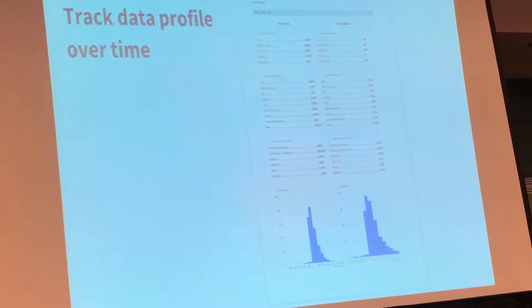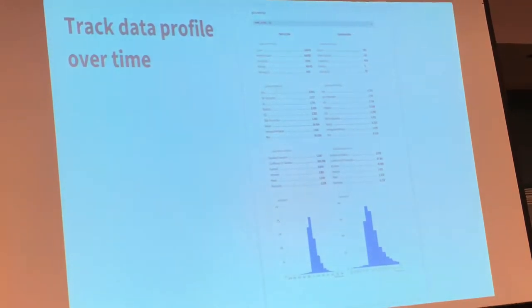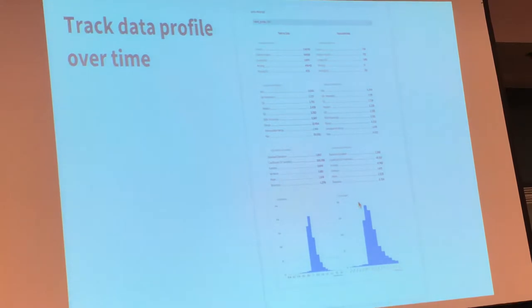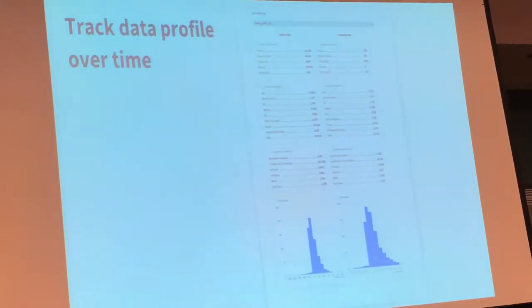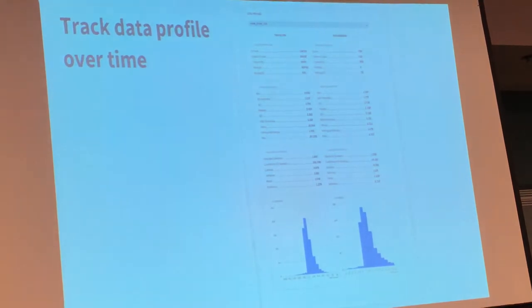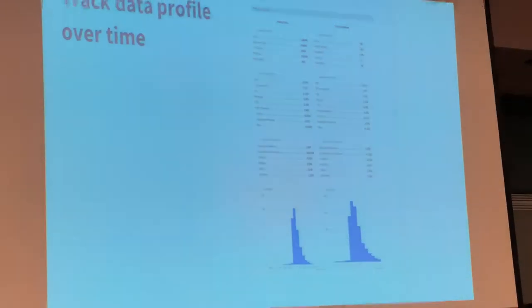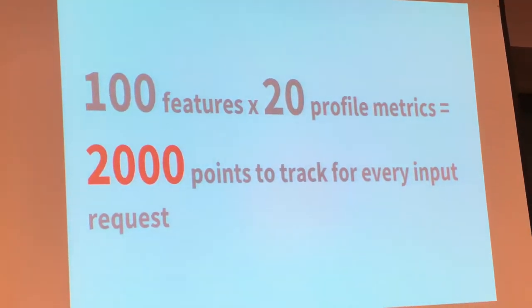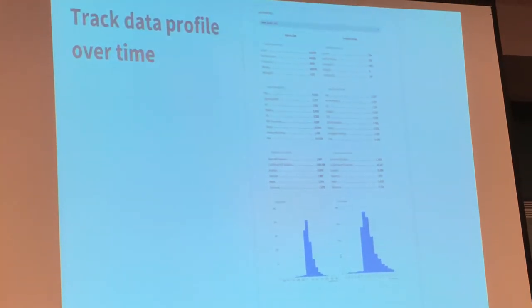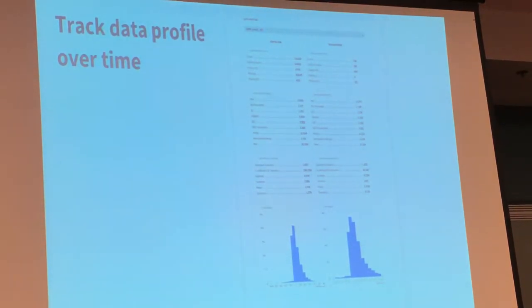Basically, tracking the difference between training and production data might give us a lot of insights. You can see that in this case the histogram — this is the one you can barely see on the screen — is different in production. It means we have a signal for our model, for data scientists, or for our automation pipeline to take a look and maybe see what's going wrong with our data pipeline, or our concept has really changed in production and we need to retrain the model with that new population. So there is a problem here.